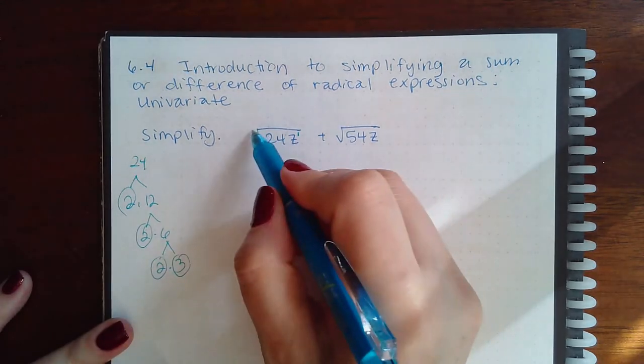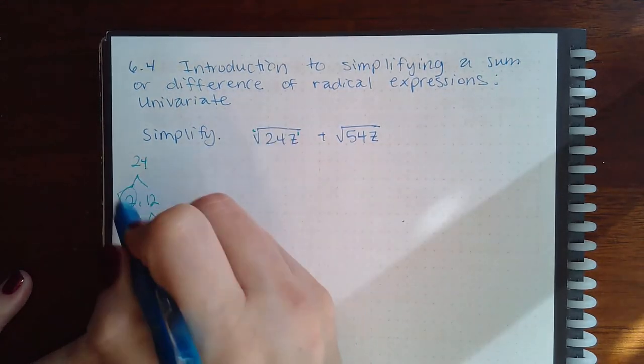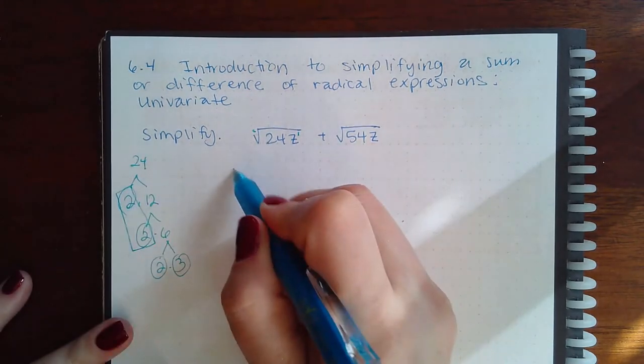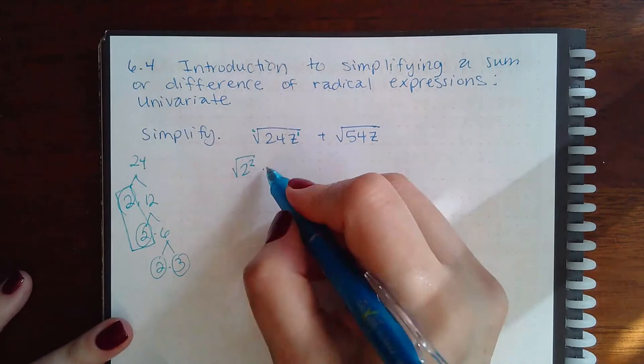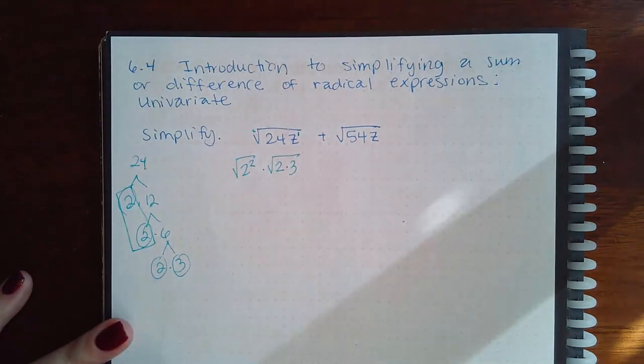And because it's a square root, I'm going to grab pairs. So I have a pair of 2's here. Square root of 2 squared. And then these don't have a pair, so they're going to go inside their own square root together.